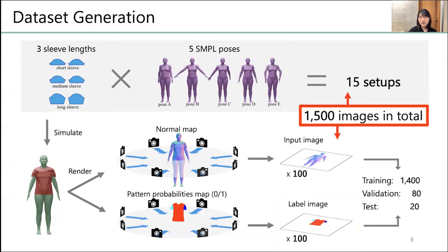In the end, with 100 images for 15 types, a total of 1500 data is generated. We divided these data into 1400 pieces of training data, 80 pieces of evaluation data, and 20 pieces of testing data.